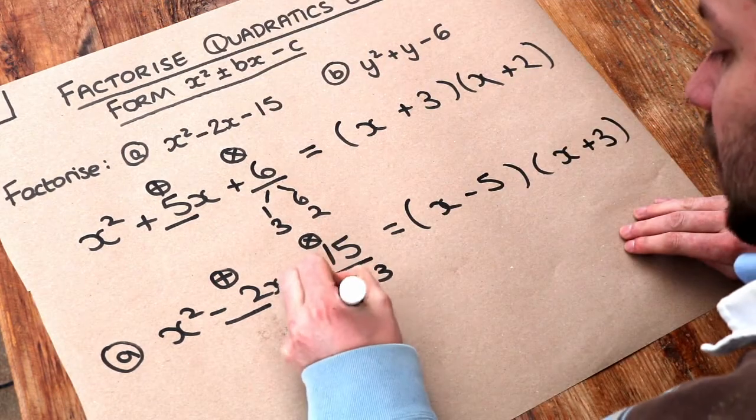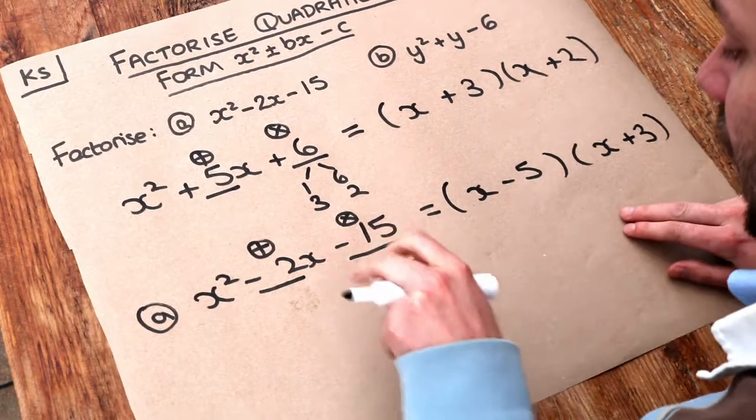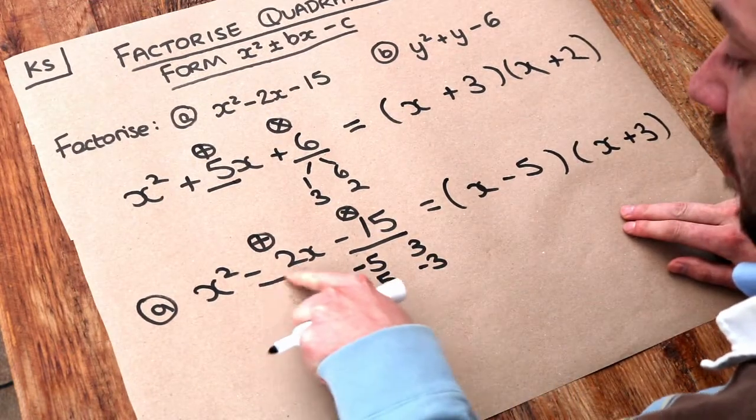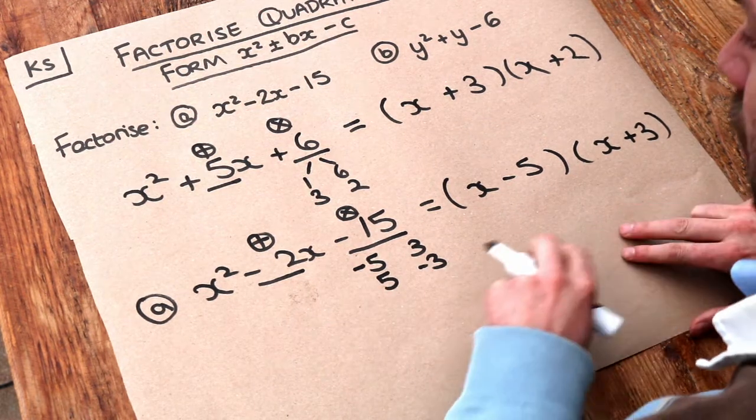If it was the other way around, if we had positive 5 and negative 3, they still multiply to give negative 15 but they no longer add up to give minus 2 because 5 plus negative 3 is 2, not minus 2. So that would be wrong.